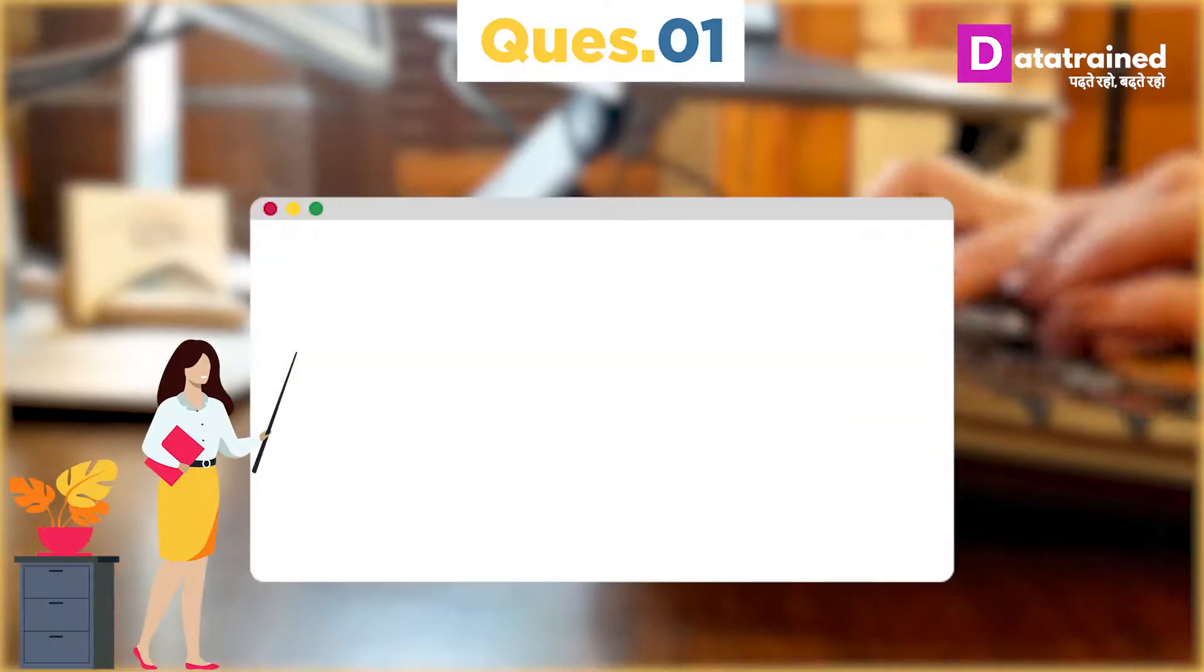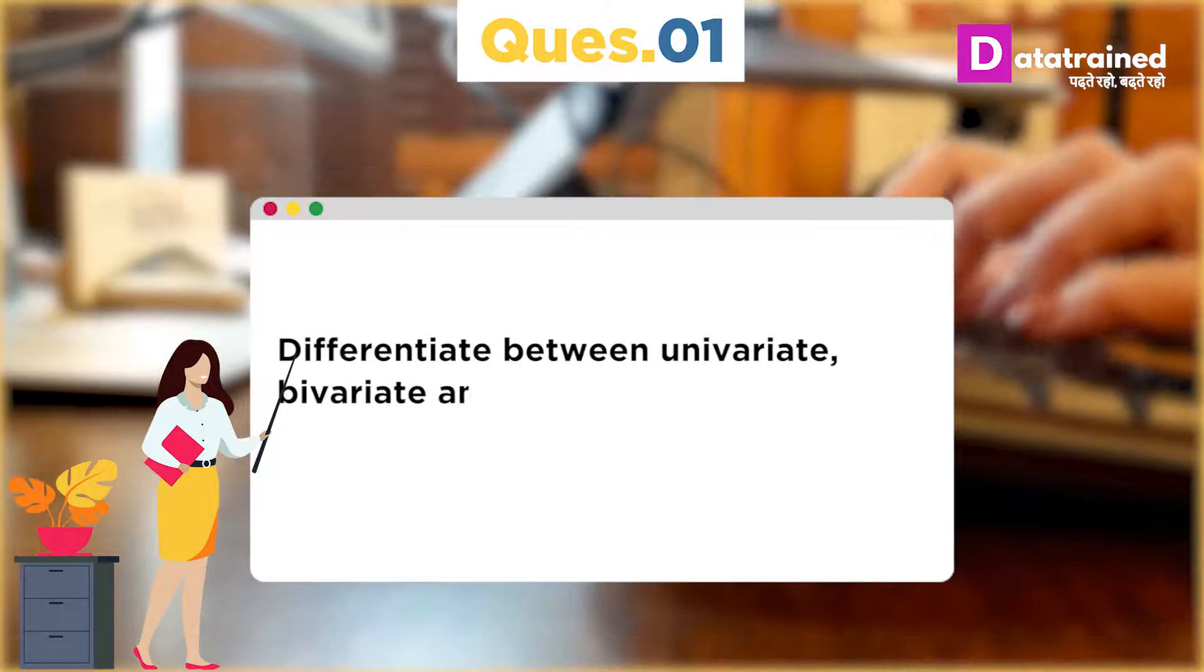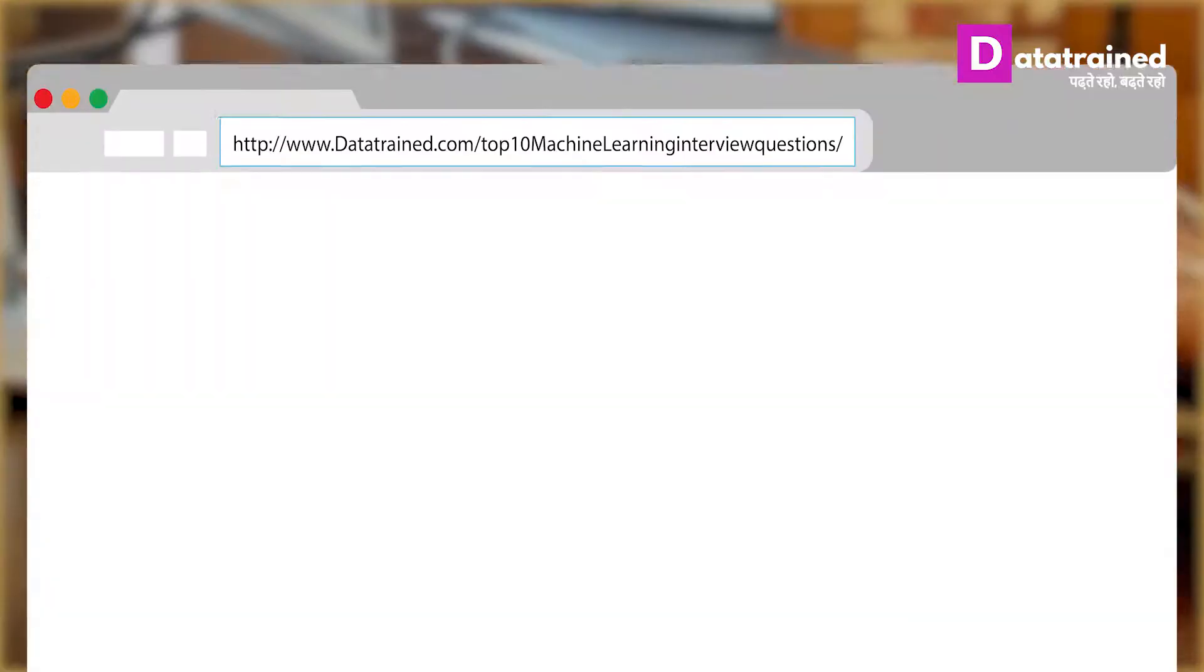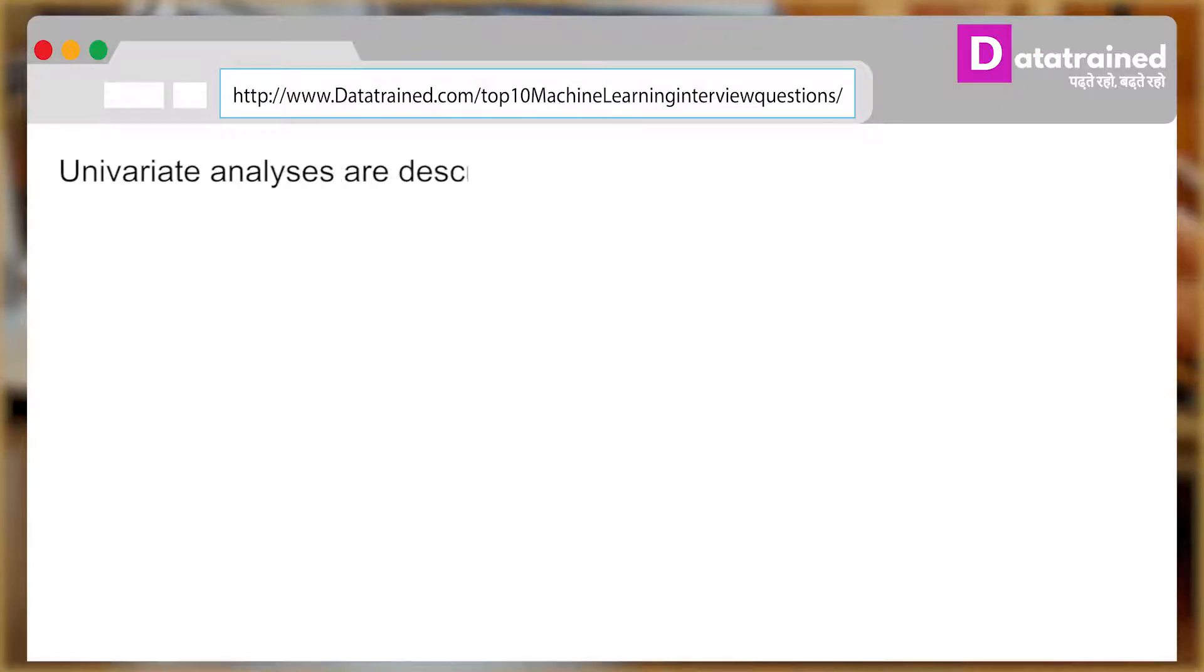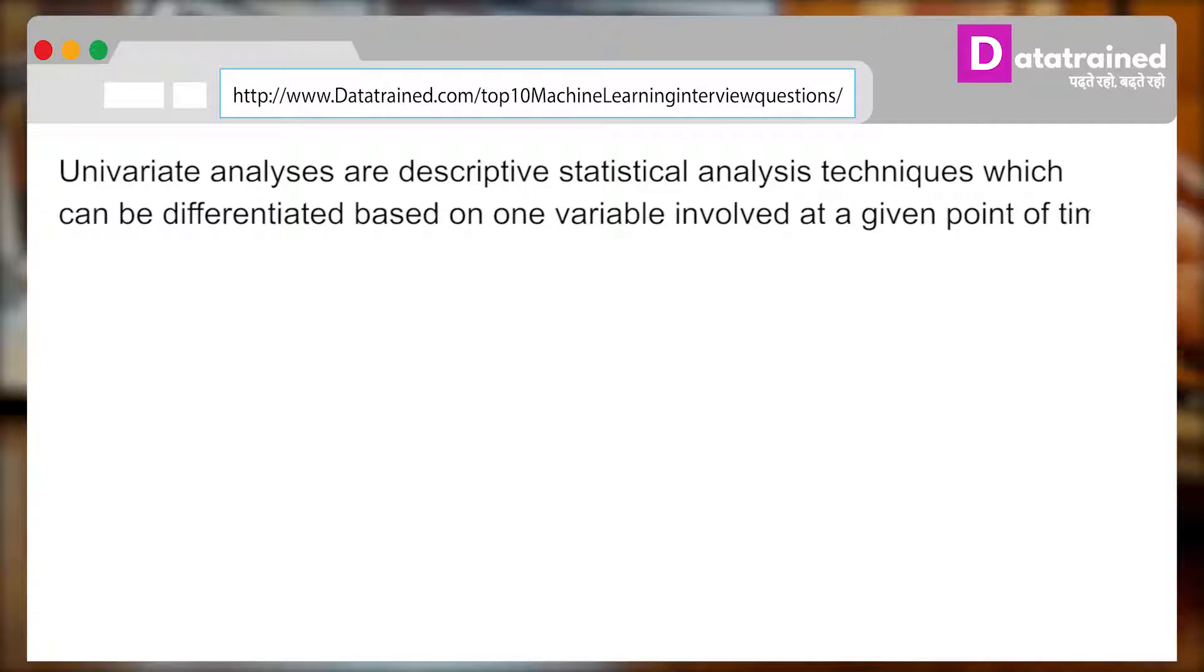The first question can be: Differentiate between univariate, bivariate and multivariate analysis. And you can answer: Univariate analyses are descriptive statistical analysis techniques which can be differentiated based on one variable involved at a given point of time.